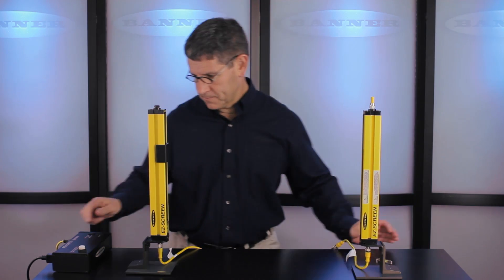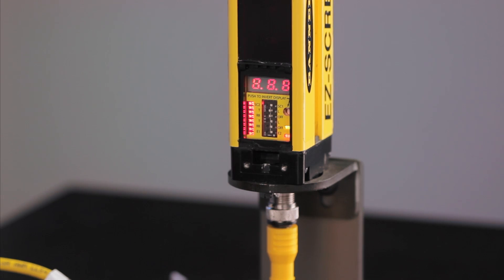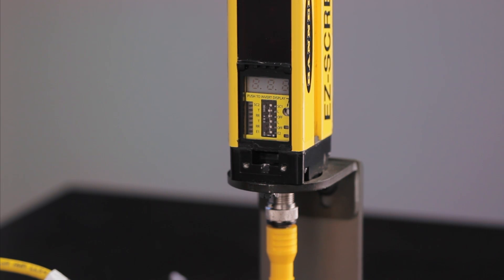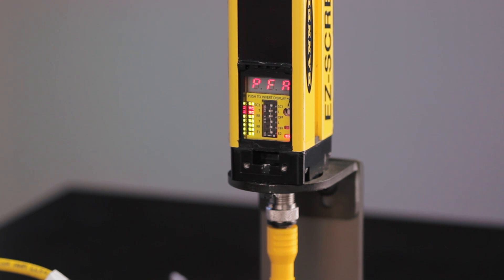Now apply power to your system. You'll notice in the display the letters PFA and then a number, program fixed blanking accessed, and the number is the number of beams that your obstruction has in the light curtain.